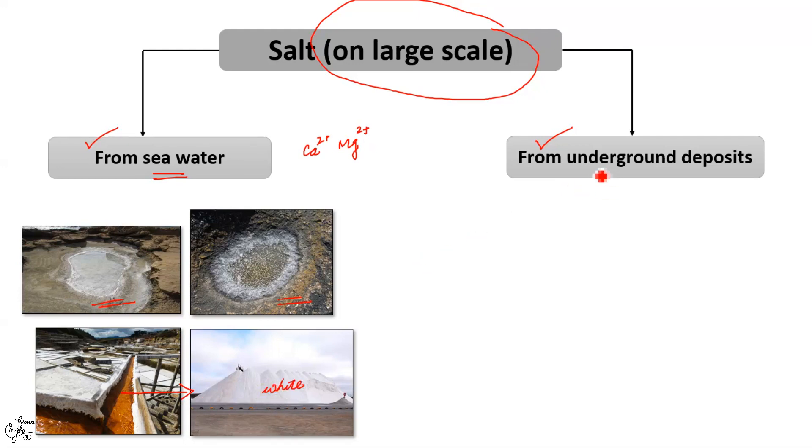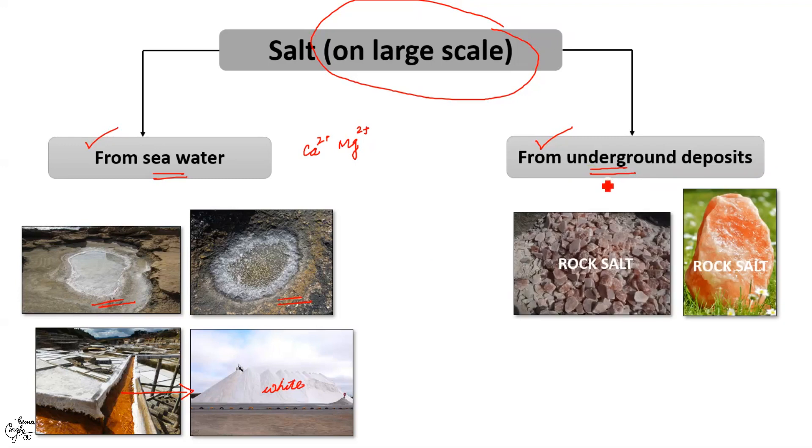Coming on to underground deposits, deposits of solid salt are found in several parts of the world. These large crystals are often brown in color due to impurities and are known as rock salt. In Hindi it is known as the Sindha Namak.